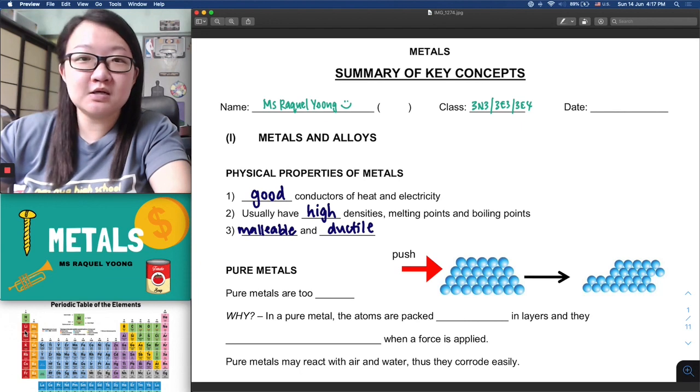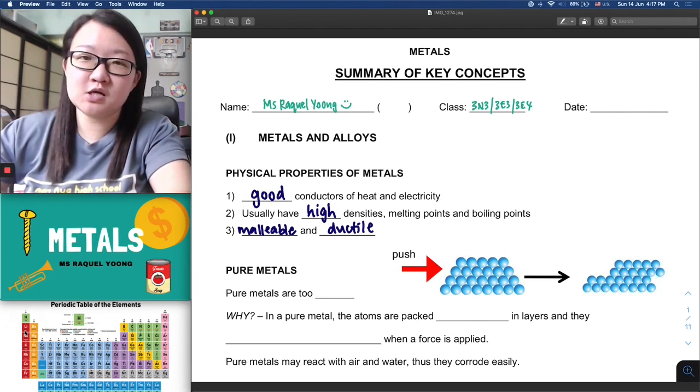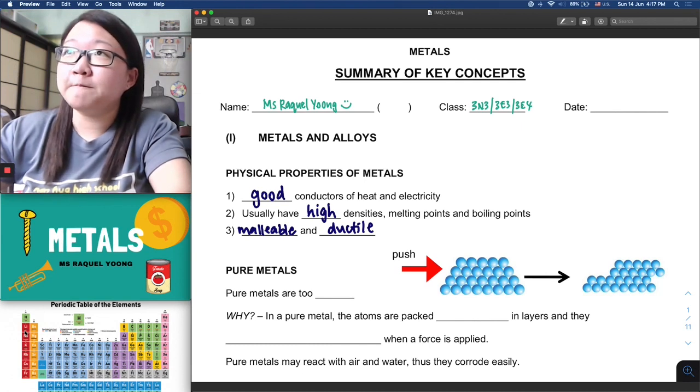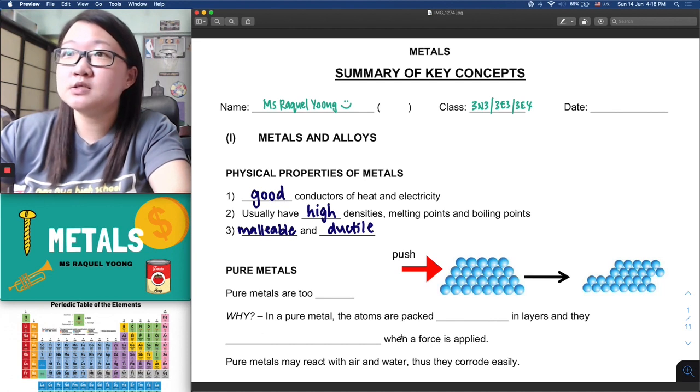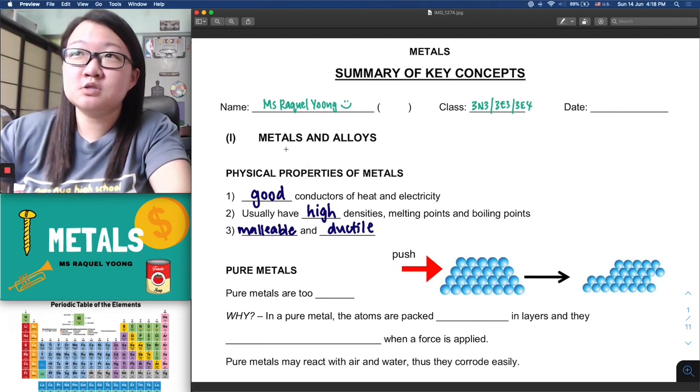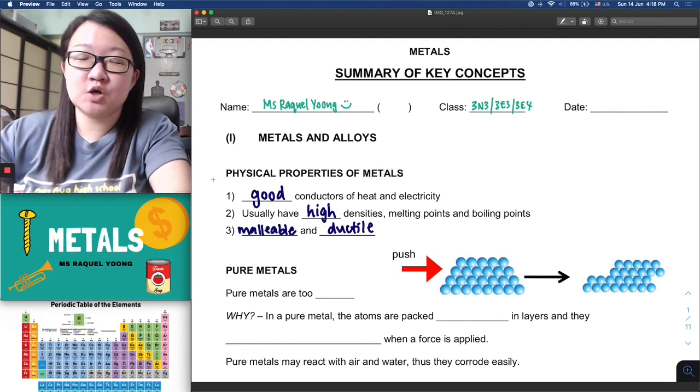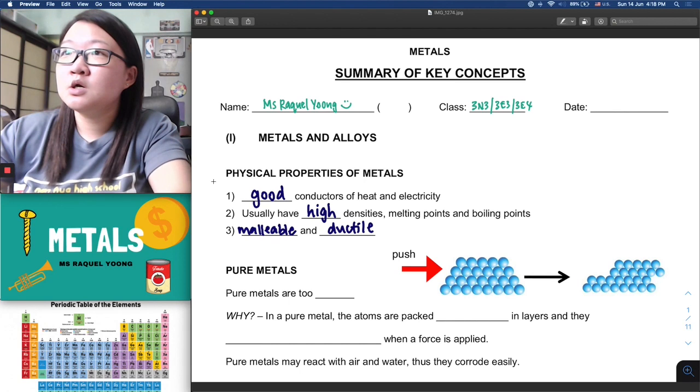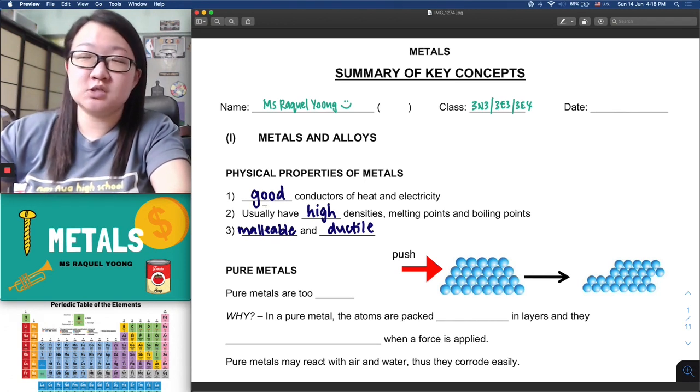So for this chapter on metals, you will realize you already know quite a bit of stuff. Now we are going to add on more layers of understanding so you can further appreciate the properties of metals and understand it in a more micro perspective. The first part of this lesson we're going to look at metals and alloys.